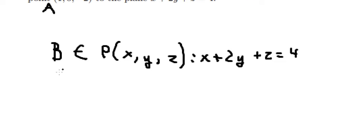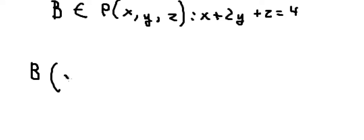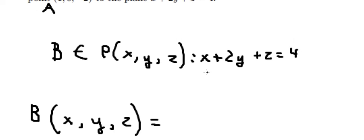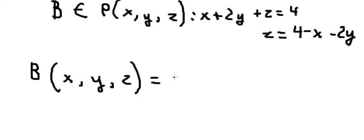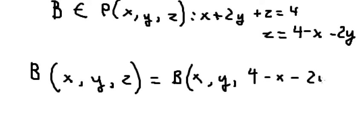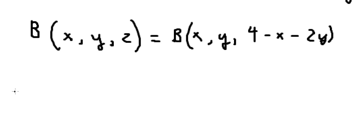Point B has coordinates (x, y, z). From the plane equation, we can solve for z: z = 4 − x − 2y. Now we can set up the distance formula by first finding vector AB. The components of vector AB are (x − 1), (y − 0), and (z − (−2)).